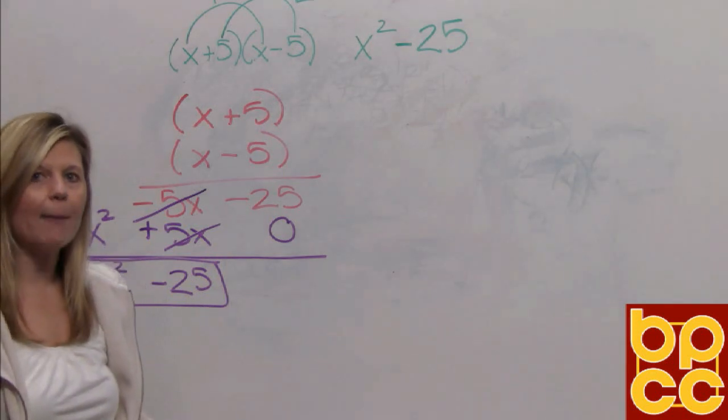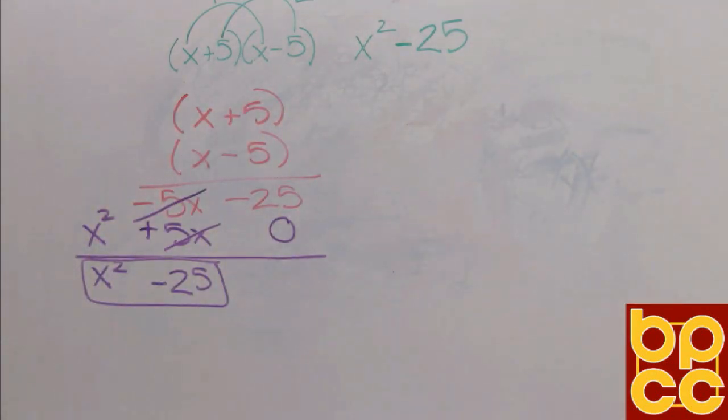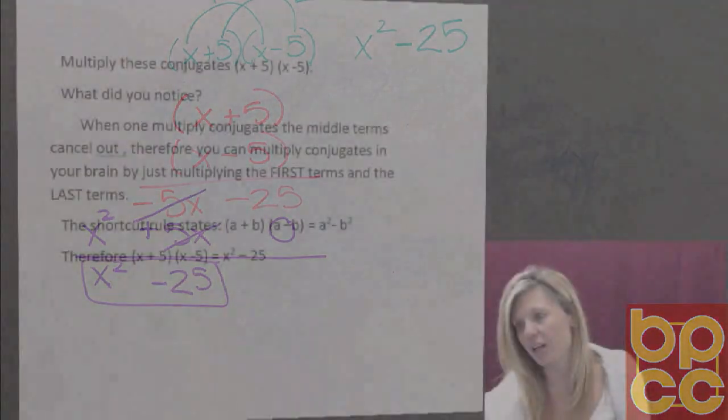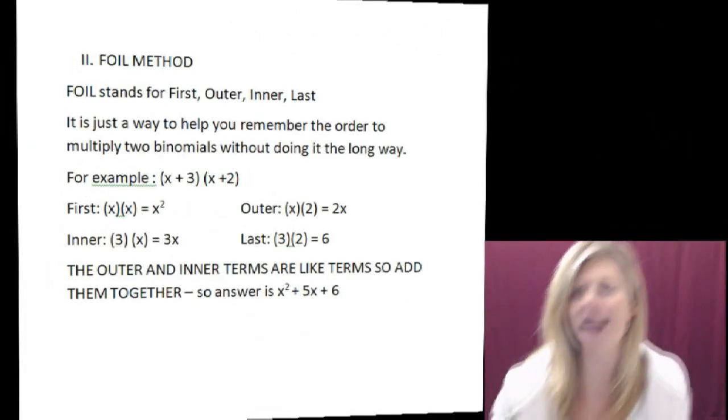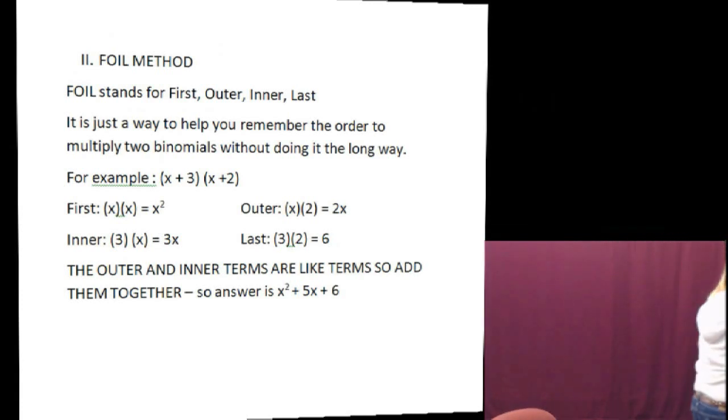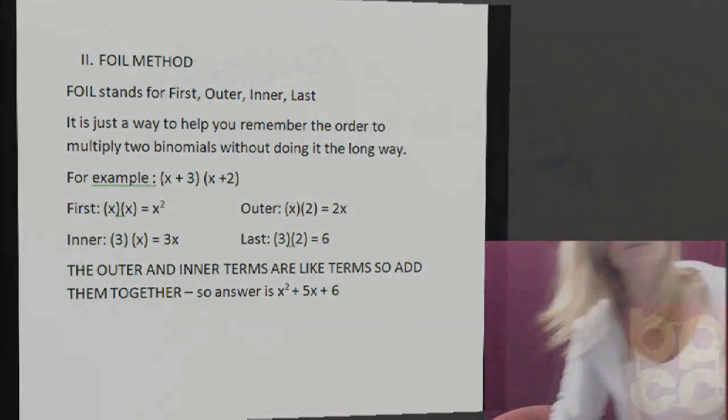What happens though if we're multiplying and they're not conjugates? So let's go and look at our notes. Let's look here at example of x plus 3 and x plus 2. They are binomials, they're each two terms, but they are not conjugates. Well there is also a trick to multiply binomials that are not conjugates without doing the work. Let's go over it.